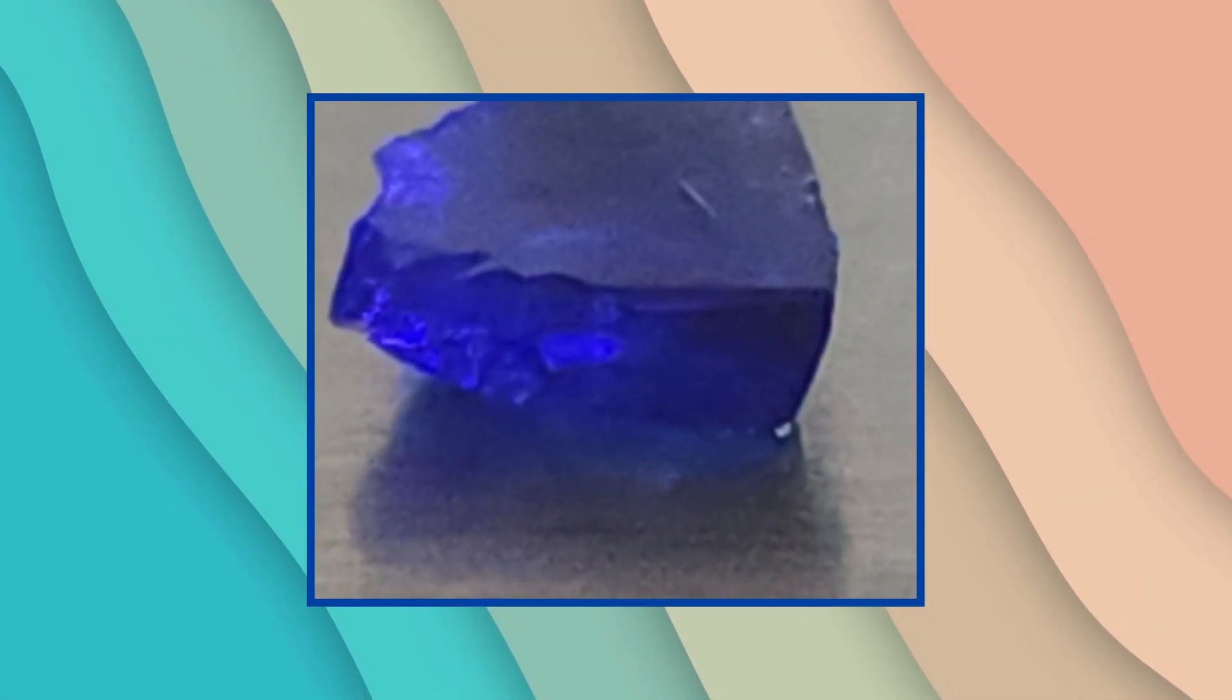Ringwudite is like a sponge soaking up water. There is something very special about the crystal structure that allows it to attract hydrogen and trap water.